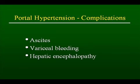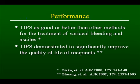There are three complications of portal hypertension: intractable ascites, variceal bleeding, and hepatic encephalopathy. TIPS shunts are used to address these, and particularly the first two complications. The performance of TIPS shunts has been remarkable over the last 10 to 20 years. TIPS have demonstrated significant improvement in the quality of life of recipients, and they perform as well or better than other ways of treating variceal bleeding and ascites.